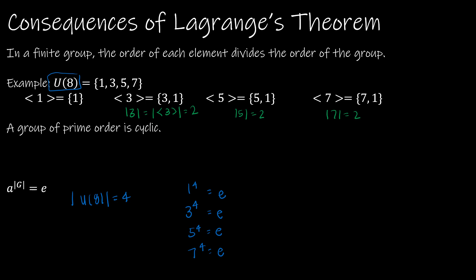Let's verify this. 1 to any power is just 1, so 1 to the 4th is the identity. For 3 to the 4th: 3 squared is 9 ≡ 1 mod 8, then 3 cubed is 27 ≡ 3 mod 8, and 3 to the 4th is 81 ≡ 1 mod 8. Similarly, 5 to the 4th cycles as 5, 1, 5, 1 and 7 to the 4th cycles as 7, 1, 7, 1. This confirms that the order of each element divides the order of the group.